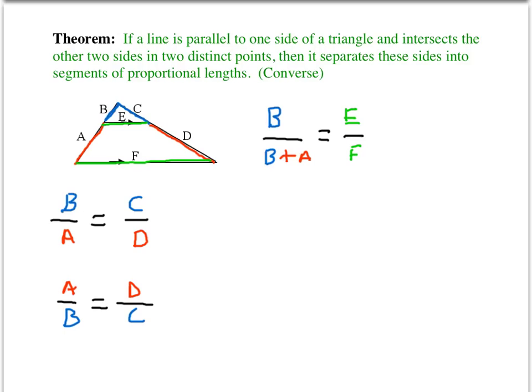So we have B divided by B plus A. In other words, B divided by B plus A, this whole side, is equal to E divided by F. Again, E is a side length of this smaller triangle and F is a side length of the larger triangle.